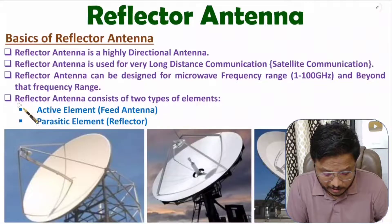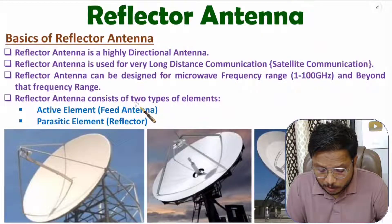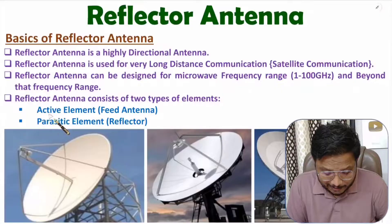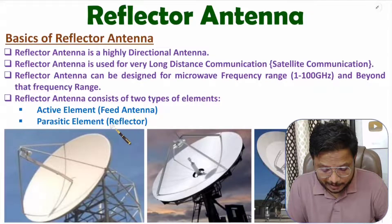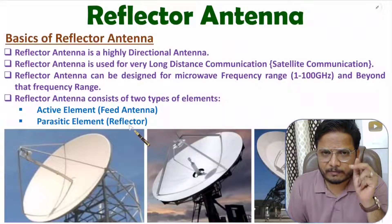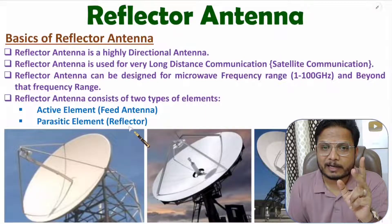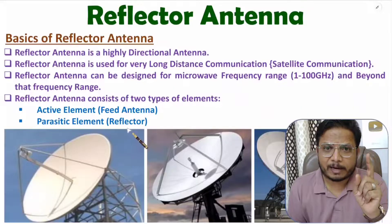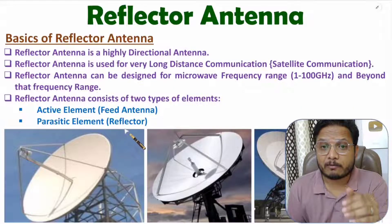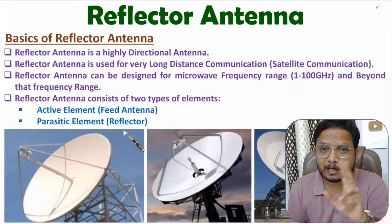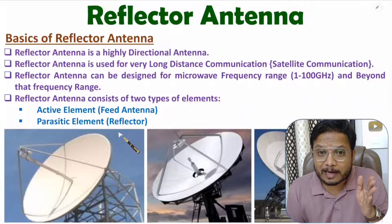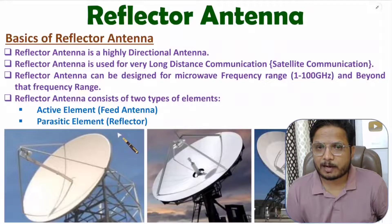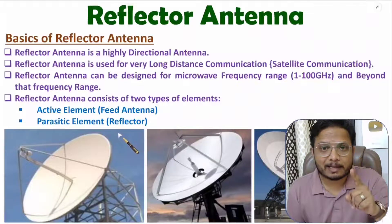If you talk about the structure of reflector antenna, it has two categories of elements: one is the active element and the second is the parasitic element. The active element is the feed antenna, and the parasitic element is the reflector. With the active element we connect a power supply, and with the parasitic element we don't connect a power supply.